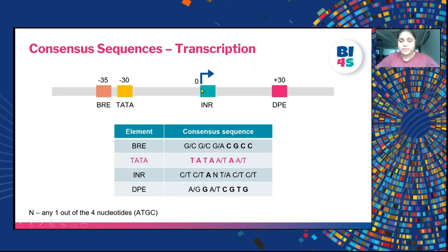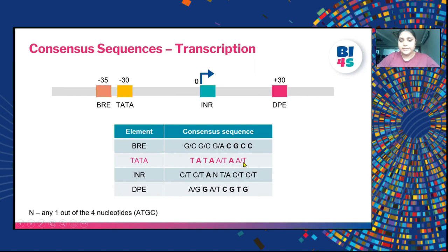The point where transcription starts is called the zero point. Sequences upstream are in negative numericals and downstream in positive numericals. Approximately 30 base pairs upstream of the transcription start site is the TATA box, and 30 base pairs downstream is the DPE. These elements are composed of the four DNA bases A, T, G and C — the TATA box notably requires TA along with additional A's and T's in its consensus sequence.